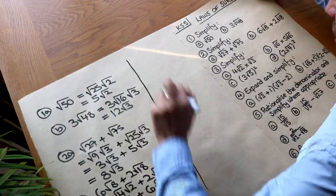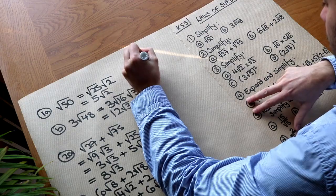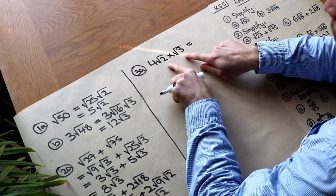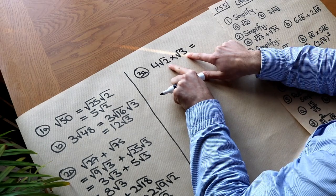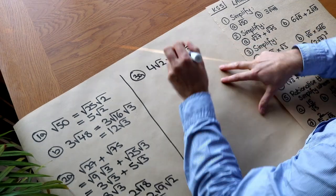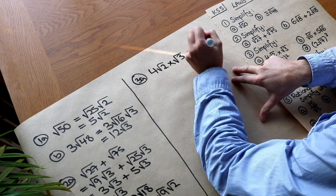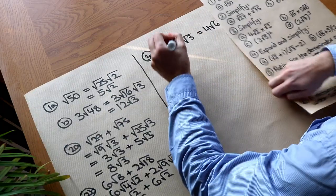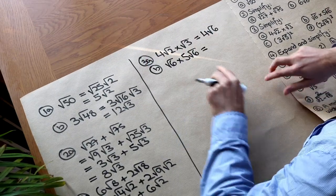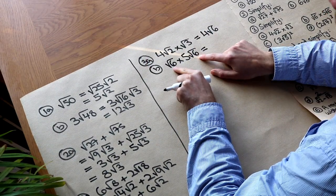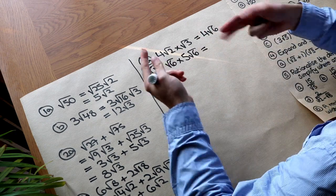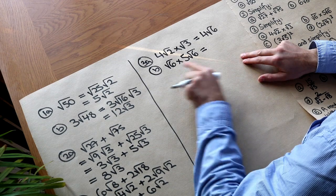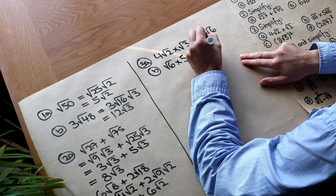Now some multiplication questions. For 4 root 2 times root 3, we multiply the surds together to get root 6, and the non-surd stays as it is, giving 4 root 6. For root 6 times 5 root 6, we multiply the surds: root 6 times root 6 is root 36, and the square root of 36 is 6. So we get 6 times 5, which is just 30. When you multiply a surd by itself, it gets rid of the square root.